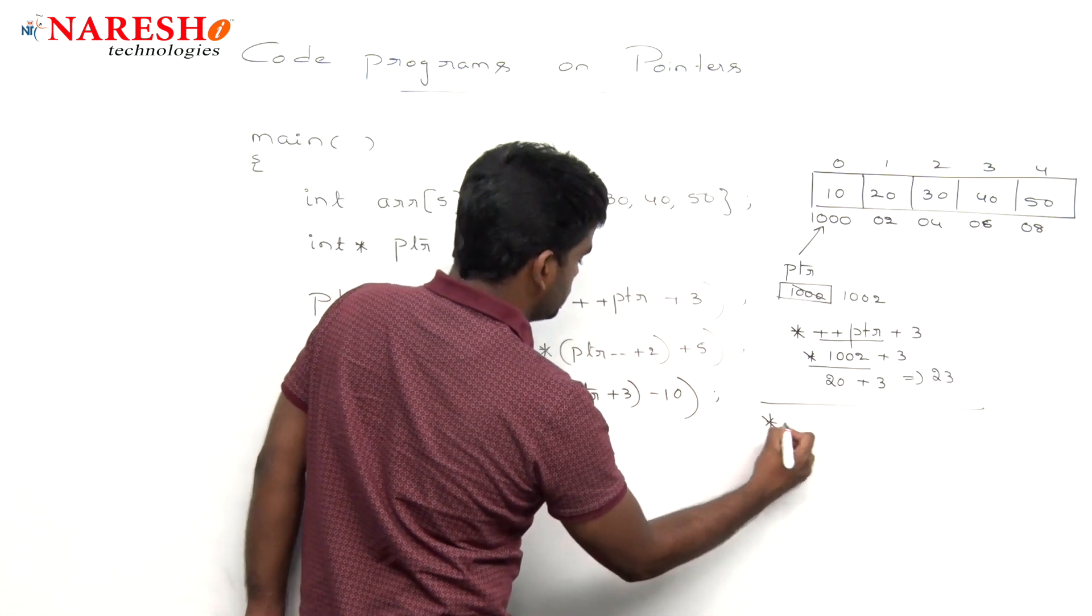So the output of this code is first one is 23, second one is 45, and that last one is 30. This is the output of this code.